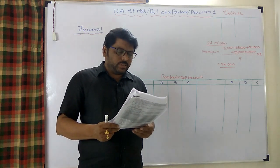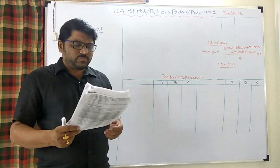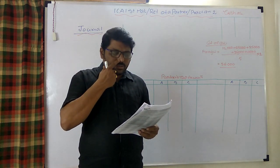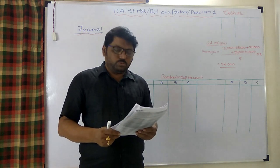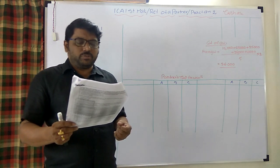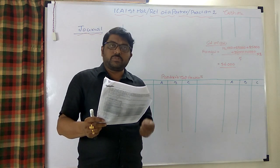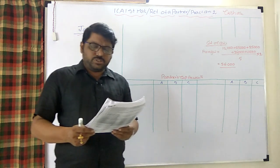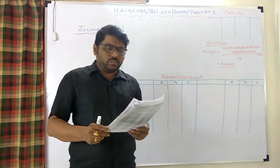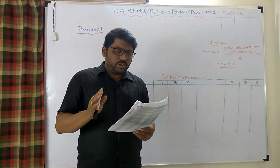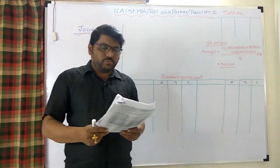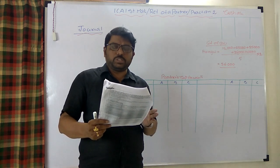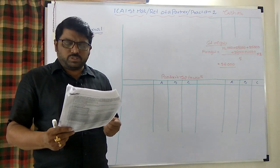B settles the amount payable to A. B and C agreed to continue business sharing profits in ratio 3:1. Firm goodwill should be eliminated. Fixtures are retained at revised value. Provision for bad debts is increased from 2% to 6%, meaning 4% additional provision needs to be created.